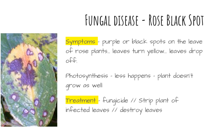It spreads through the environment in water or by wind. Gardeners can treat the disease using fungicides and by stripping the plant of its affected leaves. These leaves then need to be destroyed so that the fungus can't spread to other rose plants.